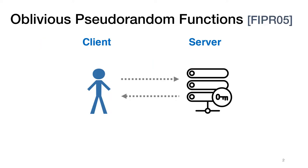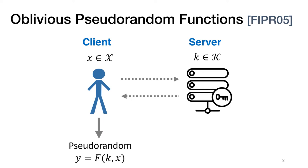An oblivious pseudorandom function is a two-party protocol in which a client holds an input x and the server holds a PRF key k. At the end of the protocol, the client learns the value of the PRF at that single input and the server learns nothing about the client's input.